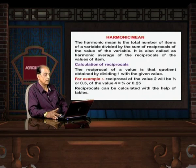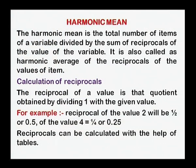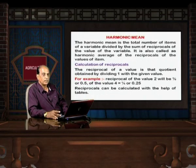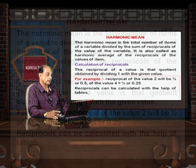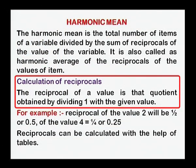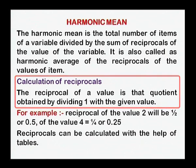Now we discuss what is harmonic mean. The harmonic mean is the total number of items of the variable divided by the sum of reciprocals of the values of the variable. It is also called the harmonic average of the reciprocals of the values of items. In order to calculate harmonic mean, we are definitely required to calculate reciprocals. The reciprocal of a value is obtained by dividing 1 by the given value — for example, the reciprocal of 2 is 1/2 = 0.5, and the reciprocal of 4 is 1/4 = 0.25. In some situations, reciprocals can be calculated with the help of tables.